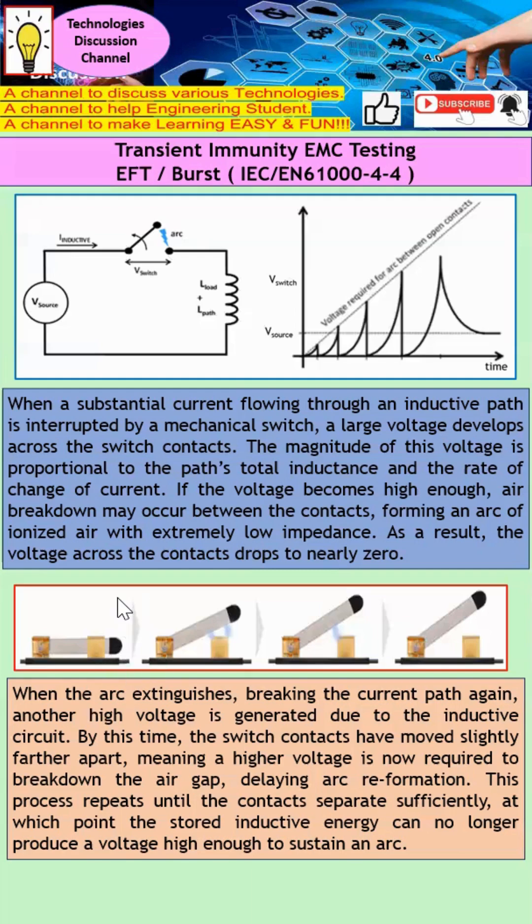Let's take a look at this diagram in order to understand better. Earlier on, I did mention that they actually have some arcing effect. So now, you imagine that the arcing effect actually extinguished, so again, they actually break the current path again. Another high voltage is again generated due to the inductance again.